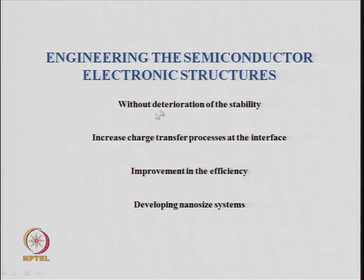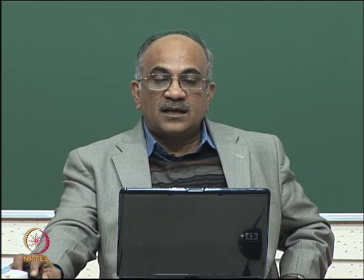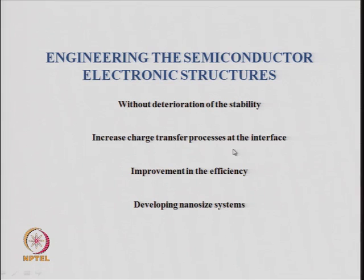How do you engineer the semiconductor electronic structure for water splitting? You must consider stability — the photocatalyst should work without deterioration over many cycles. You also need to improve charge transfer processes at the interface where the semiconductor meets the water junction, and develop nano-sized systems to improve photochemical efficiency. Developing nanostructured materials may help in the efficiency of photochemical splitting of water.